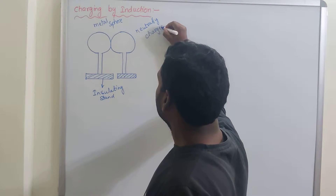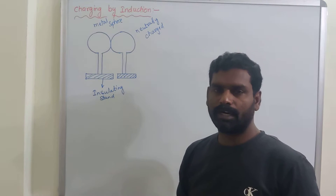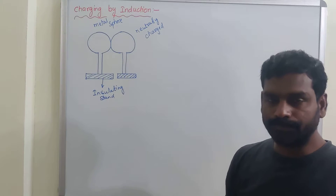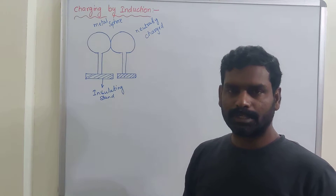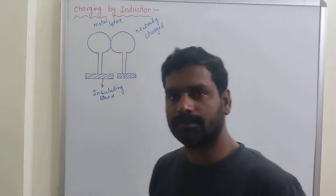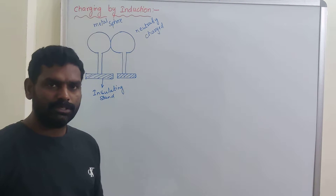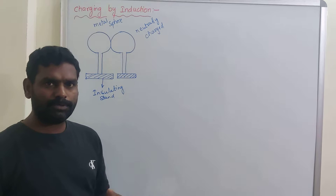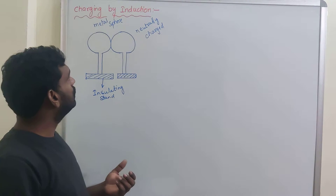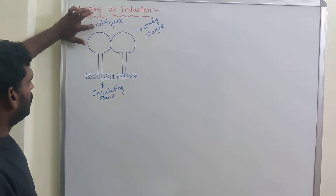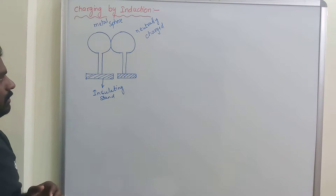Because we know metals are made of atoms or molecules. Each atom consists of an equal number of positive charges and an equal number of negative charges. So the total amount of charge on the atoms is equal to zero. That is why initially the two metal spheres are neutrally charged.